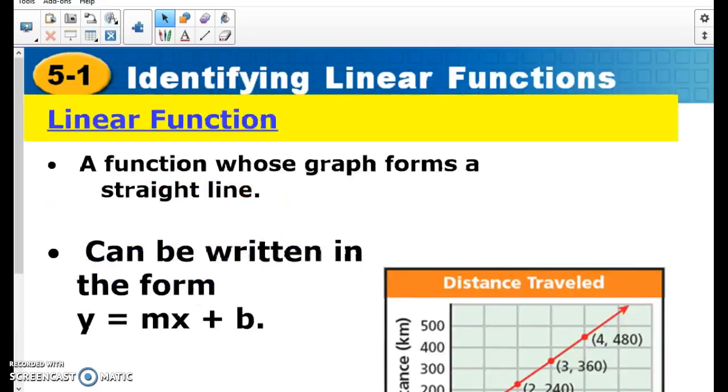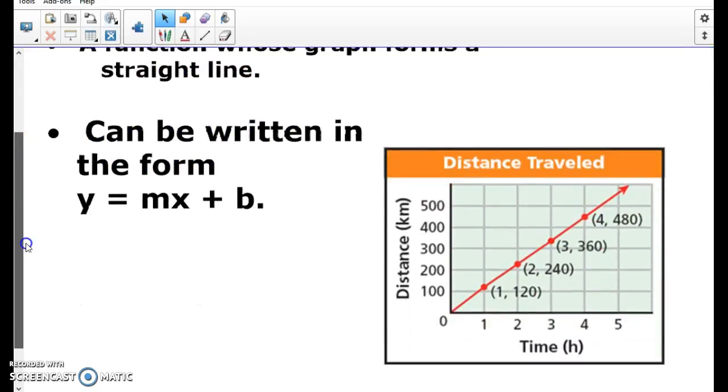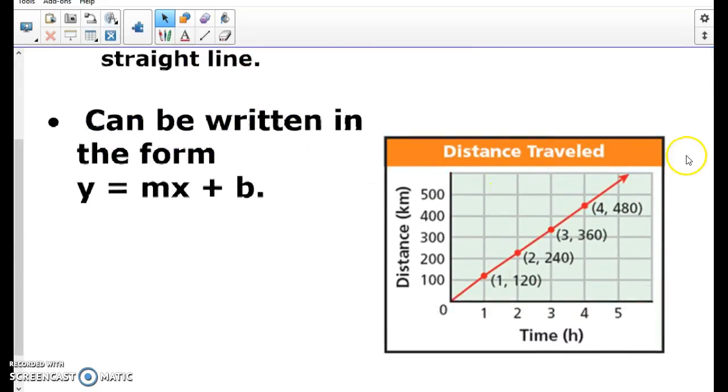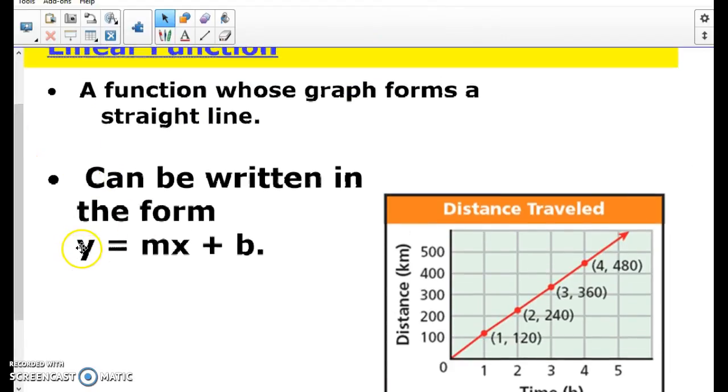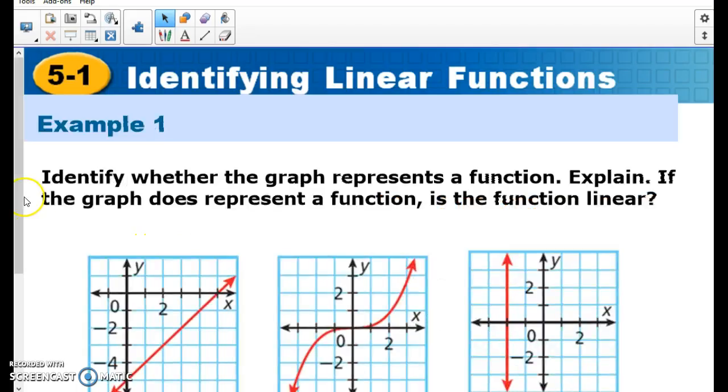There's a couple different ways to tell. The first way to tell is with that graph: is it a straight line, is it linear? So you're just going to be writing yes or no. The other way to tell is if it's written in this form, where y equals m times x plus b. We'll talk about what those are here in a second.